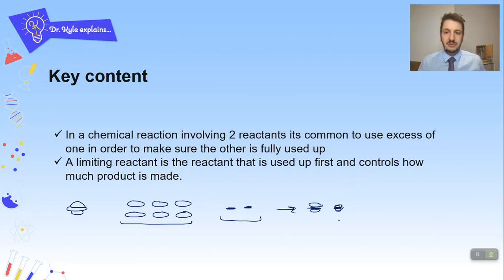Therefore they're going to control how much is made. Hopefully you can understand that because there's only two burger patties, the maximum amount of burgers that you can make is two. Therefore your burger buns are in excess. There's too many, there's too much of it, there's enough of it to react. The other one's the limiting reactant.